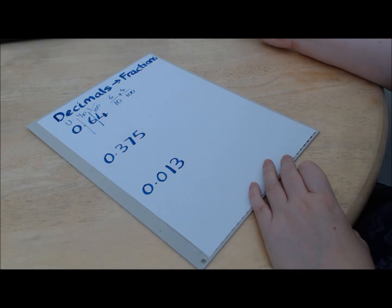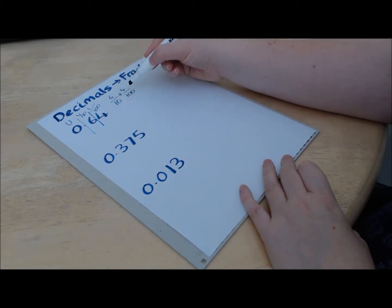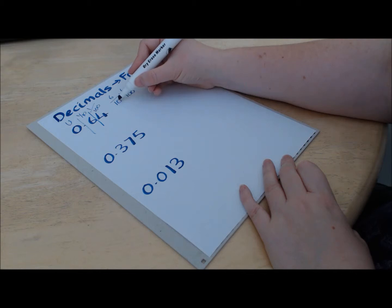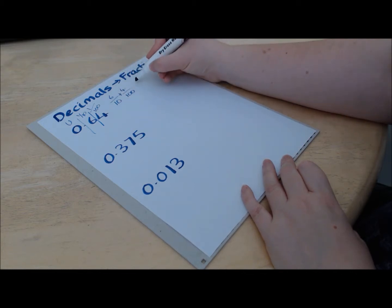Now, remember, we need to have the same thing on the bottom in order to be able to add fractions together. So we can turn this 10 into 100 by multiplying by 10. So we do the same to the top.